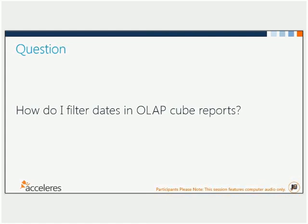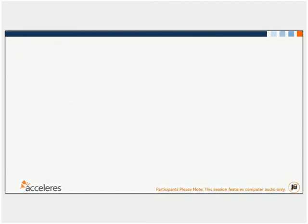We have a couple more minutes — feel free to type questions into the chat. A live question came in: 'I'm building request offerings for the self-service portal with simple lists of 45 or more items. I read on TechNet that creating a management pack enumeration list could be a good way to manage these rather than the simple list per request offering. Is there a good tutorial on creating custom MP enum lists?'